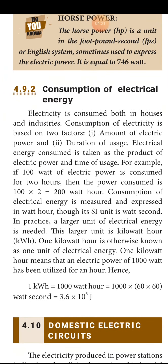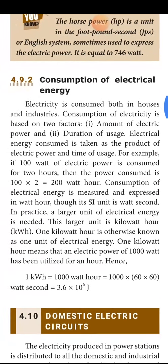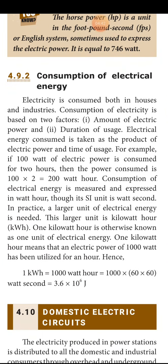One kilowatt is the measuring unit used in one hour. One hour consists of 60 minutes and 60 seconds, so one kilowatt hour equals 3.6 × 10⁶ joules. Electricity is consumed in both houses and industries. Consumption of electrical energy is based on two factors: amount of electric power and duration of usage.